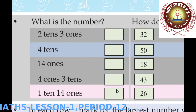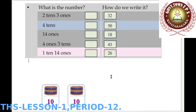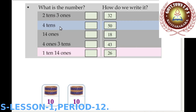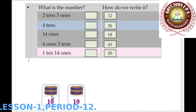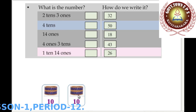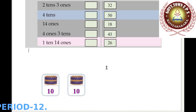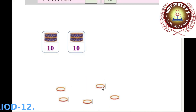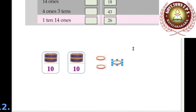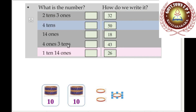Two tens and three ones: here is a group of 10 bangles, another 10 bangles — two tens, that is 20. When we add three bangles: one, two, three. Total bangles: two tens and three ones, ten plus ten is 20, plus 3 equals 23.